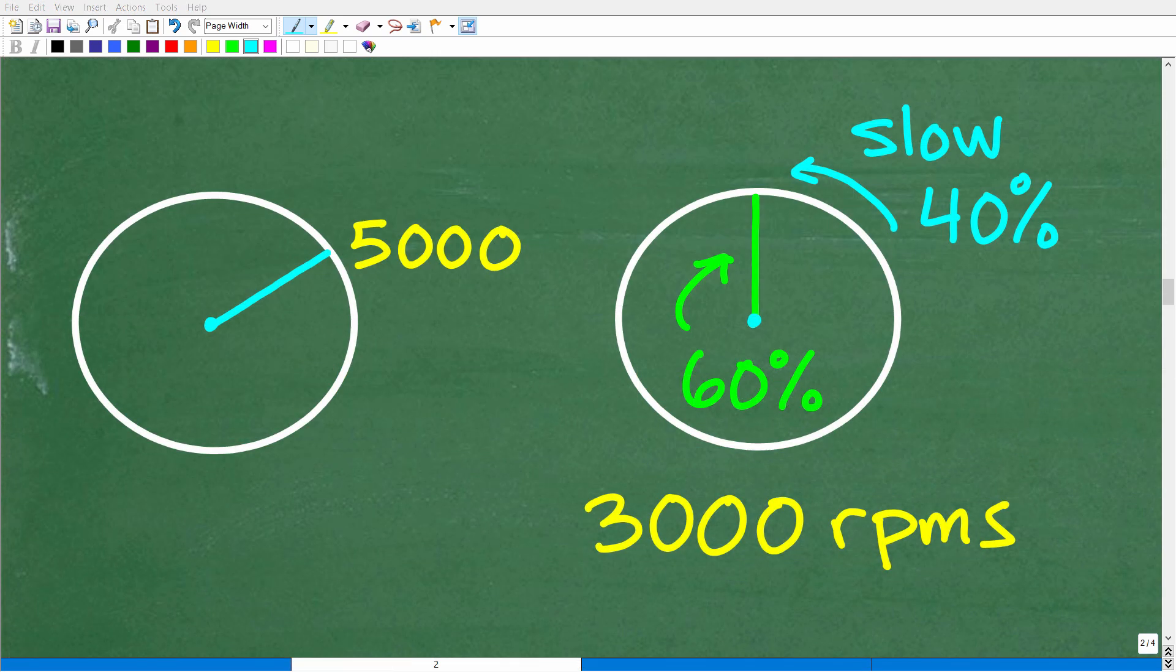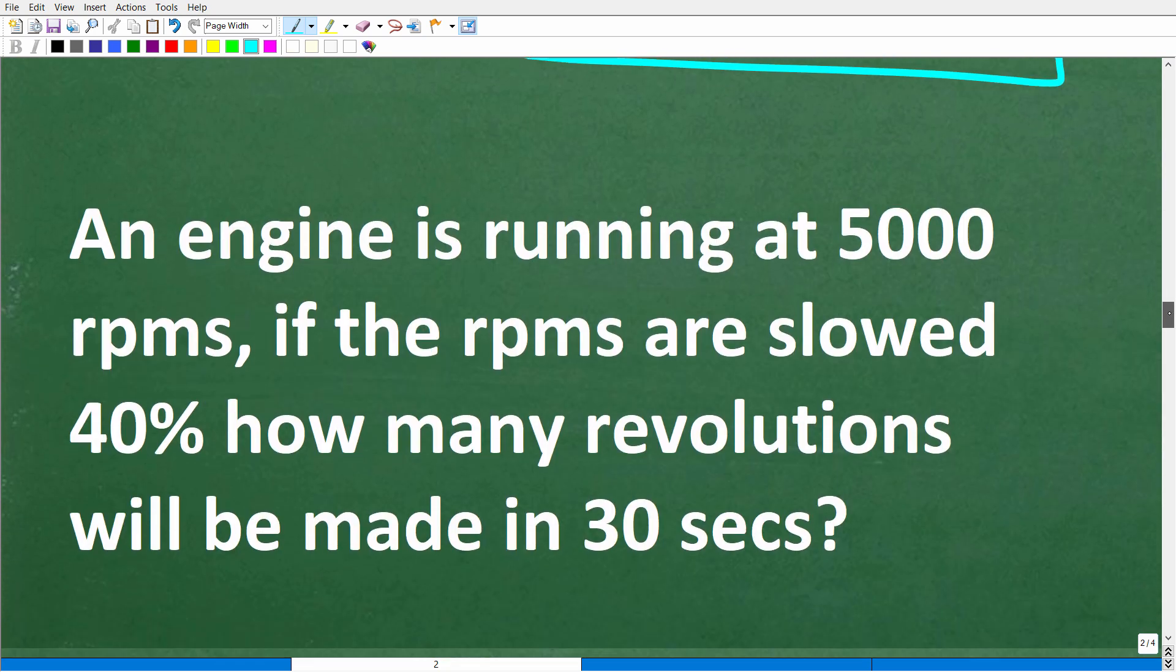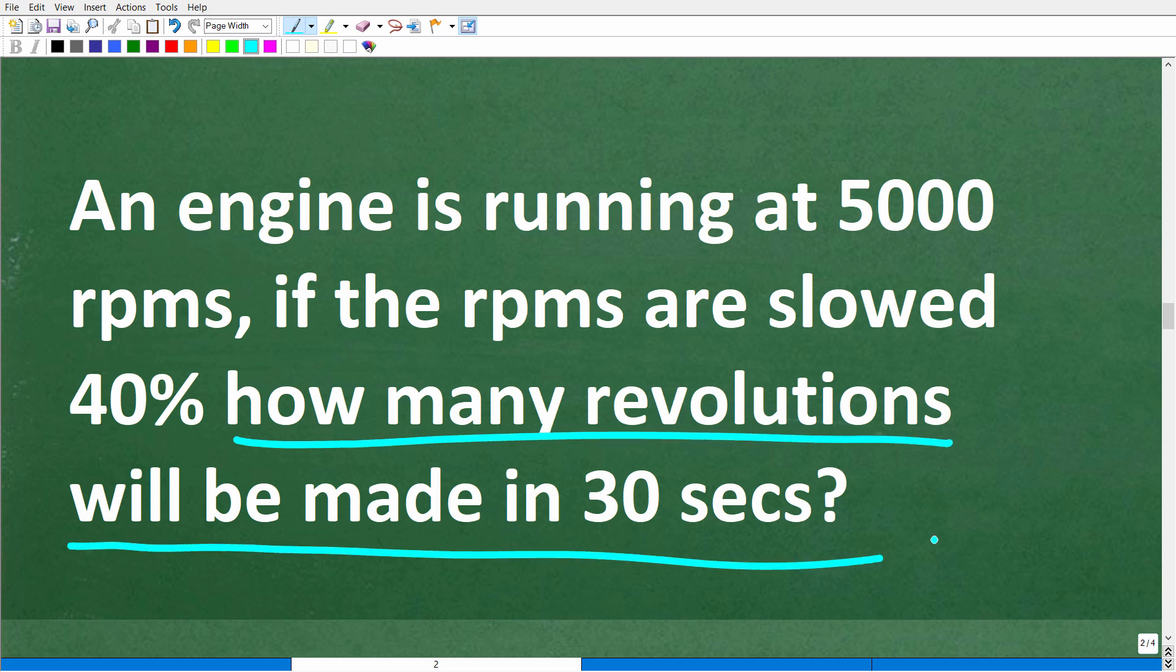So so far, we figured out that if an engine going at 5,000 RPMs, if we slow it down by 40%, it's going to be going 3,000 RPMs. Now, this is not the answer to the question because the question is asking what? Well, it's asking how many revolutions will the engine make in 30 seconds after we slow it down by 40%.